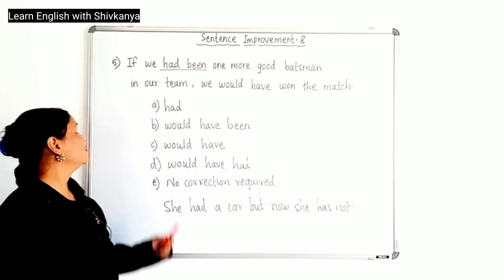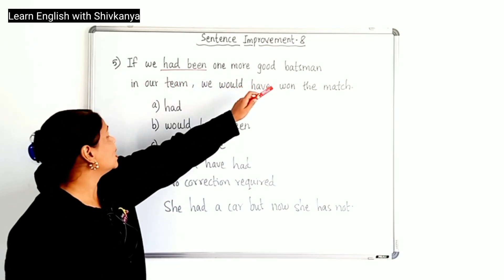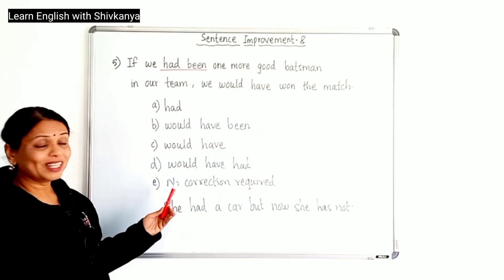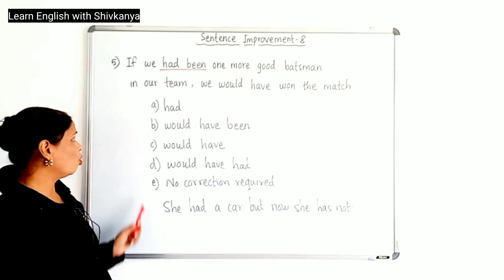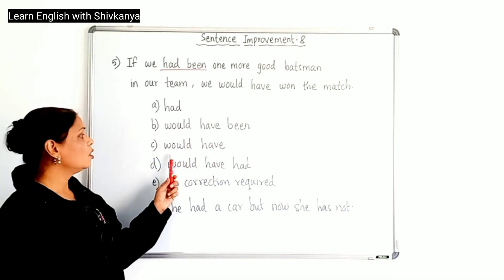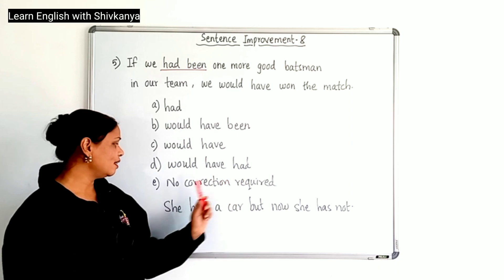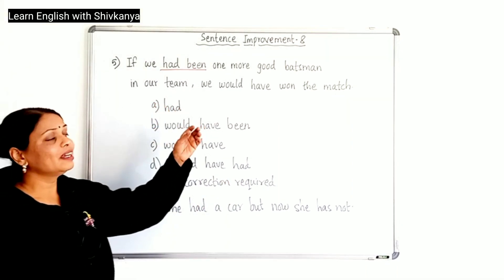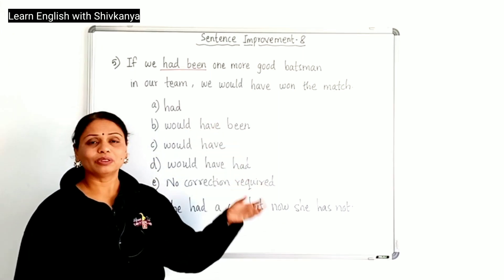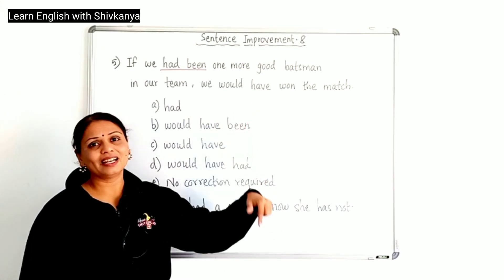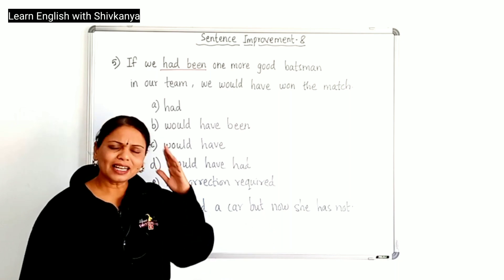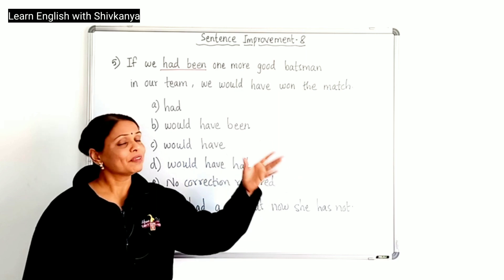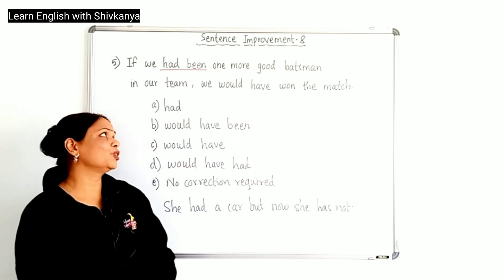Sentence number 5: If we had been one more good batsman in our team, we would have won the match. The wrong phrase is 'had been.' The options are: had, would have been, would have, would have had, and no correction required. This is a third conditional clause. By the way, there is a complete lesson based on the third conditional — the link is given in the i-button and in the description box. A detailed explanation with many examples is given there. Please watch that lesson; it will be beneficial for you.